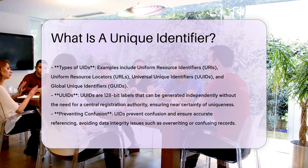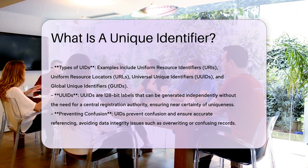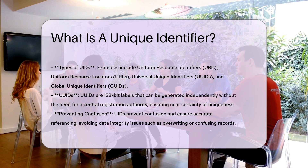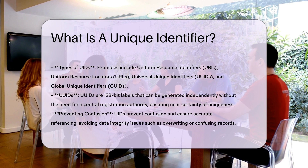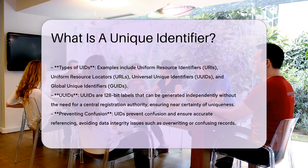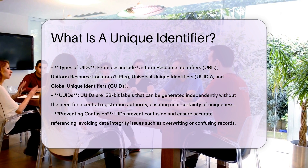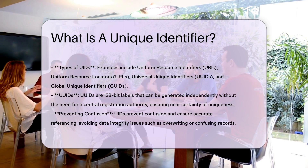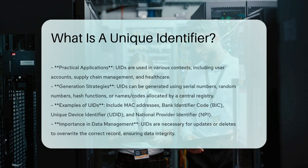UIDs can take various forms, such as uniform resource identifiers (URIs), uniform resource locators (URLs), universal unique identifiers (UUIDs), and global unique identifiers (GUIDs). Each type serves specific purposes and ensures uniqueness across different systems. For example, UUIDs are 128-bit labels that can be generated independently without the need for a central registration authority. This makes them highly useful for identifying objects in computer systems with near certainty of uniqueness.